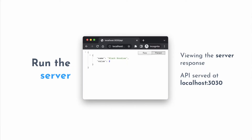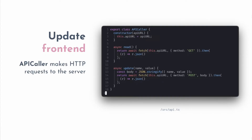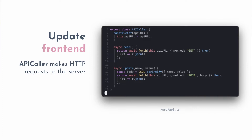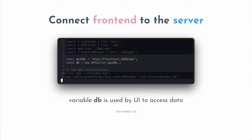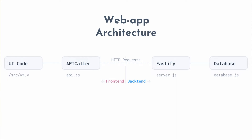First we run the server, and you can see it's returning the GET response. Then we update the front end, which is basically fetch calls — because it's a web app, it's sending HTTP requests to the server, and then that responds with the data and your front end gets updated. The API caller is stored in a variable called DB, and that's basically what the front end uses to make calls to get, update, read, or delete data.